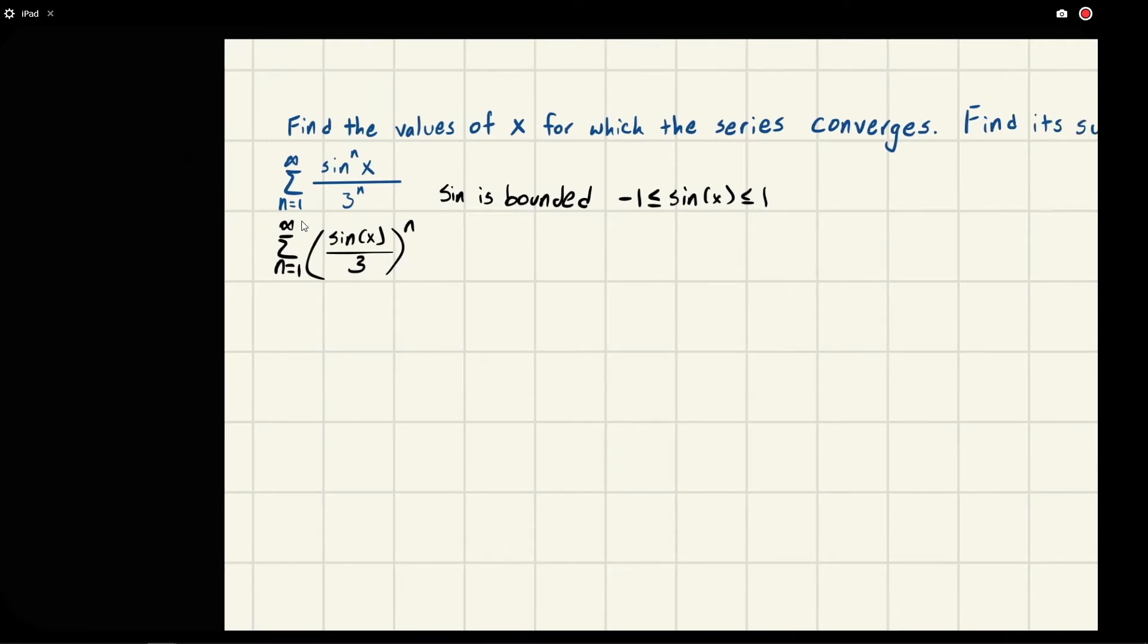We've already noticed that sine is bounded, so this thing is always going to be convergent because sine is never going to get bigger than three, and because of that we will always be less than one.